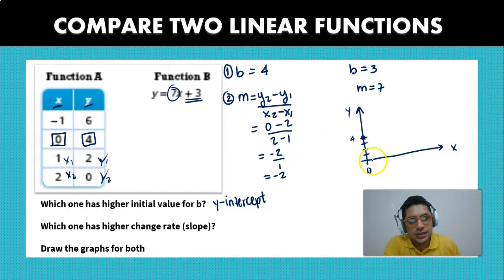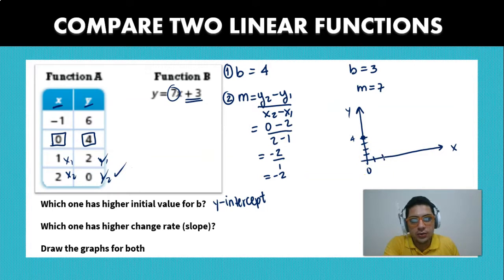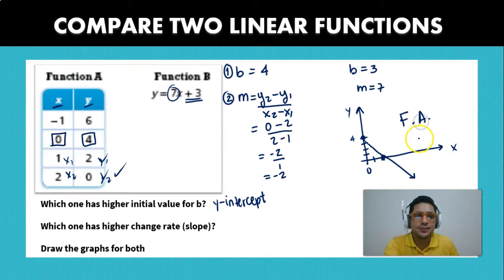And as you can see, for the value of the second value, we can choose this one, which is 0 and 2. So a value of x equal to 2 gives us a value of 0. So that means that the graph is going to be like this, okay? And this is going to be function A, right?